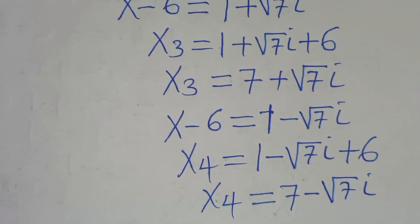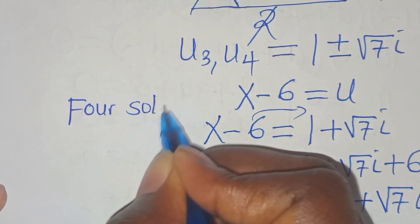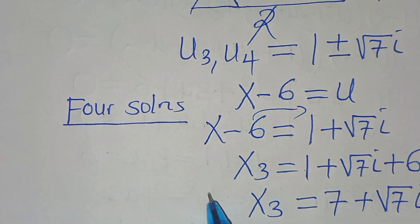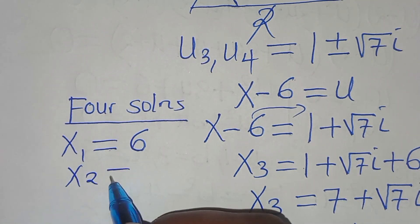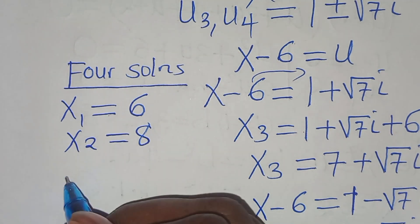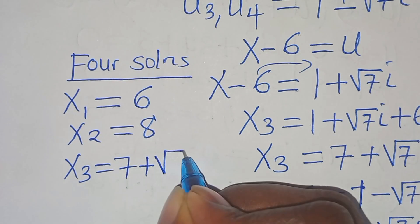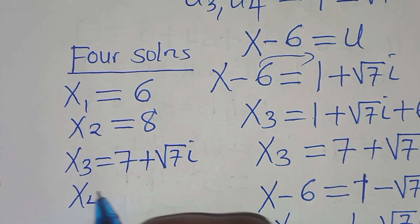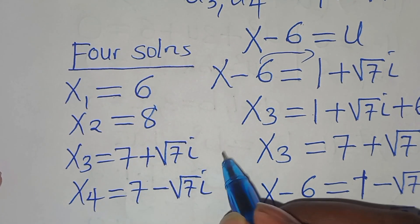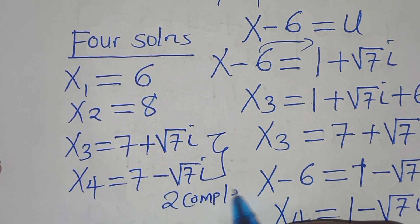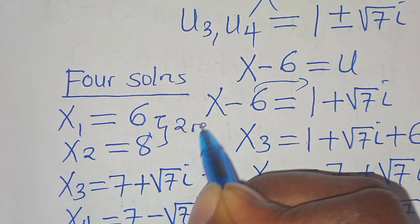This means there are 4 solutions to this algebra problem. We have x₁ equal to 6, and x₂ equal to 8 as the two real solutions. Then x₃ equals 7 plus square root of 7 times i, and x₄ equals 7 minus square root of 7 times i, which are the two complex solutions.